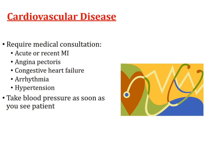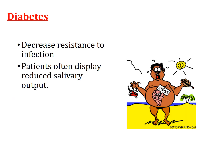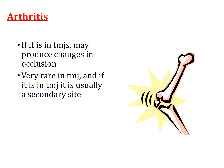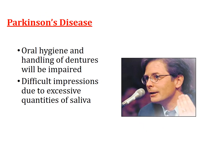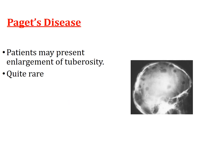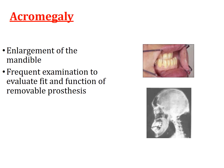Diabetes should be assessed as discussed in the previous lecture. Arthritis and Parkinson's disease cause lack of coordination. Paget's disease results in episodes of bone resorption and deposition, meaning the patient may complain of the denture becoming tight or loose — this needs to be taken into consideration. Acromegaly results in a large mandible.